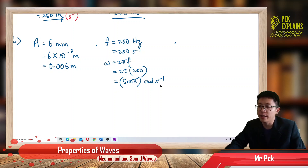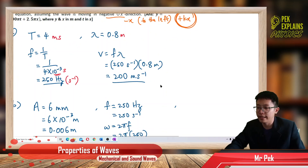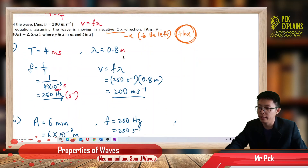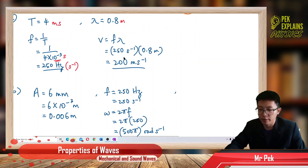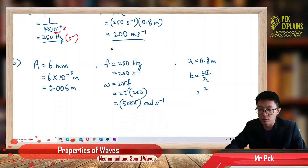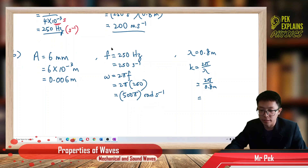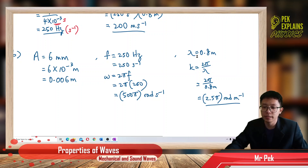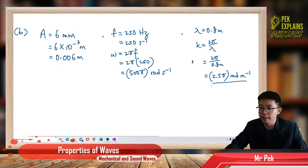Now what is my wave number? I need to find the wave number. I have my wavelength, which is 0.8 meter. So my k = 2π over lambda = 2π over 0.8 meter. My answer is 2.5π radian per meter. Because my lambda is in meter, my k is per meter. So I already have my amplitude, omega, and k.